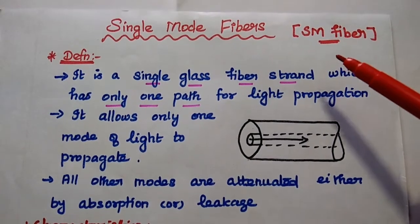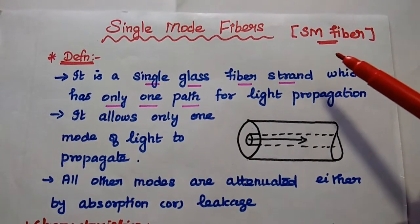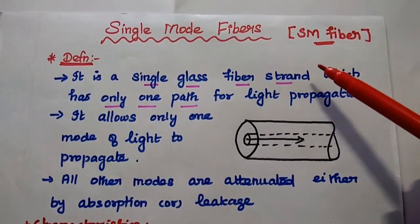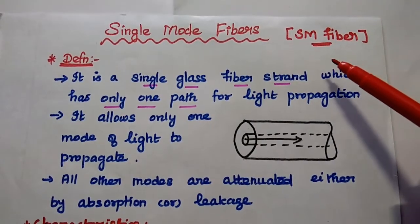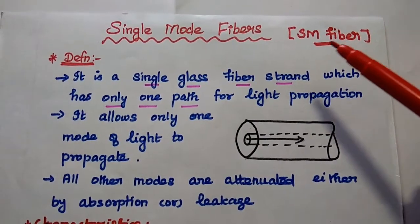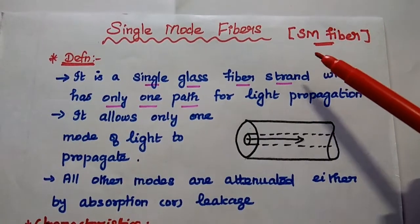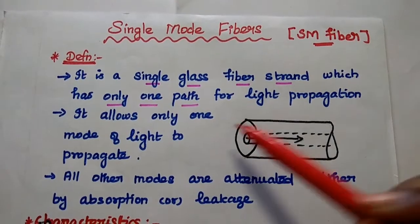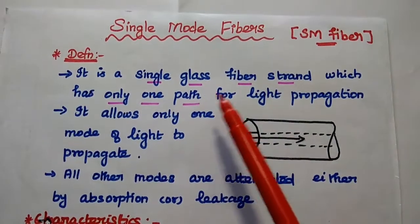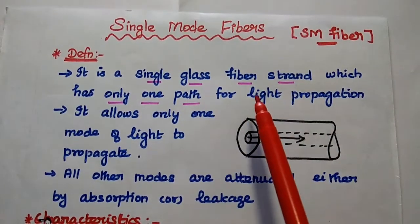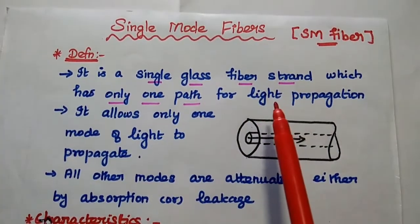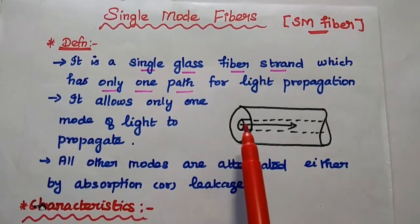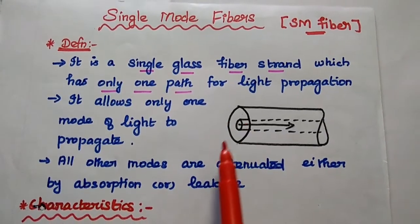Dear students, now we are going to discuss single mode fiber and its characteristics in detail. Single mode fiber is also called as SM fiber. It is a single glass fiber strand. It has only one path for light propagation through it.